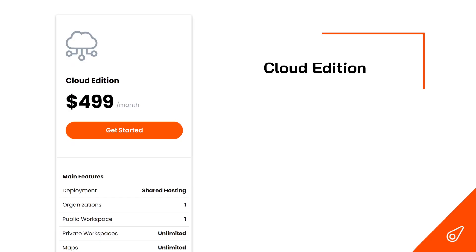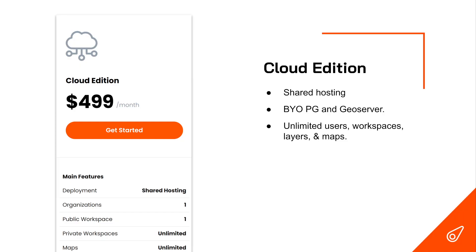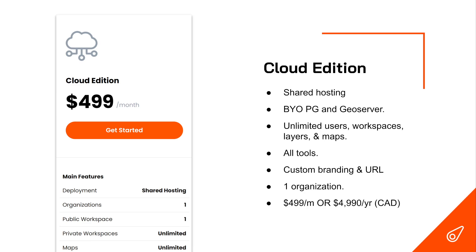The Cloud Edition is shared hosting but bring-your-own Postgres and GeoServer. We have clients who maintain their own Postgres and GeoServer and simply don't want to migrate to a Luna GeoServer, but still want to use LunaMap. All we do is connect your Postgres and GeoServer into LunaMap and you have access to the entire application. Like all editions, you get unlimited users, workspaces, layers, and maps, access to all tools, custom branding and URL, and one organization. The price is $499 per month or $4,990 per year.